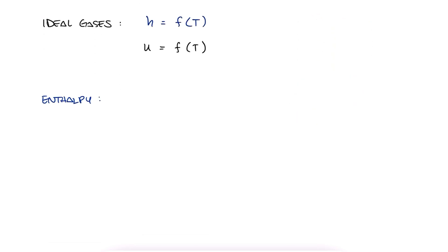From the definition of enthalpy, we know that it is equal to the internal energy plus p times v, which for an ideal gas is also equal to r times t.